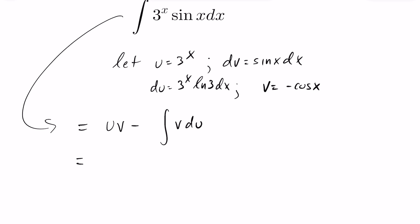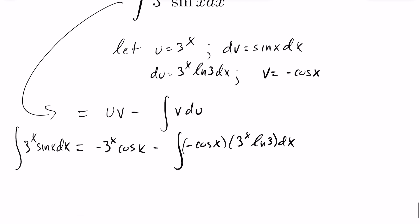So in this case here, we've got u times v. So we have negative 3^x cos(x) minus the integral of v, which is negative cos(x) times du, which is going to be 3^x ln(3) dx. So I now know the integral of 3^x sin(x) dx is equal to the following.